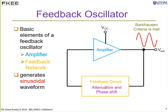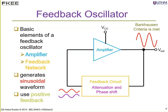The feedback circuit attenuates the signal, so the feedback signal is smaller in amplitude than the output signal, and it may be out of phase depending on the type of amplifier used. This feedback oscillator uses positive feedback where the feedback signal is in phase with the input to the amplifier, forming a closed loop so that oscillation occurs.